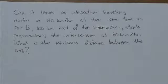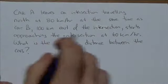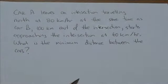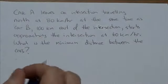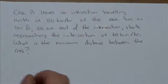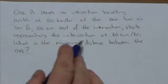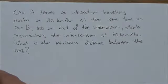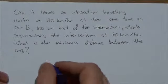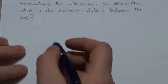Hi everybody, I wanted to give you another video talking about a problem that hasn't shown up a lot in class or in the review package. Car A leaves the intersection traveling north at 80 kilometers an hour at the same time as car B, 100 kilometers east of the intersection, starts approaching the intersection at 60 kilometers an hour. What is the minimum distance between the cars?